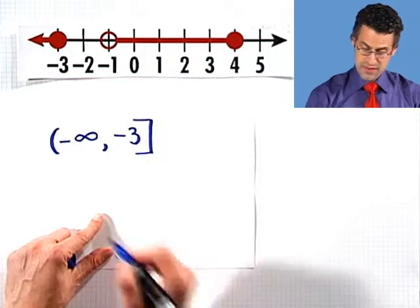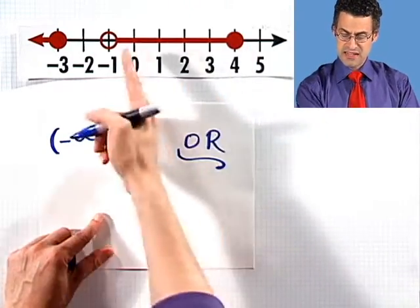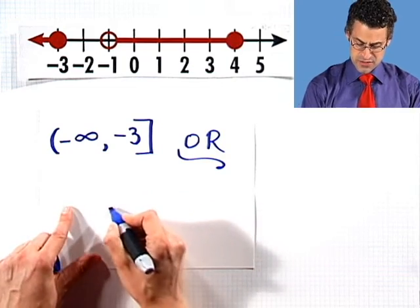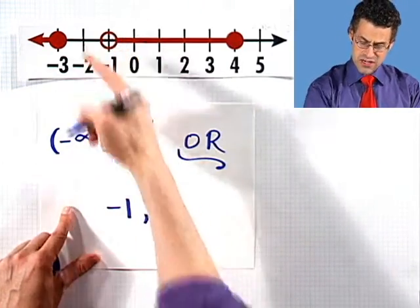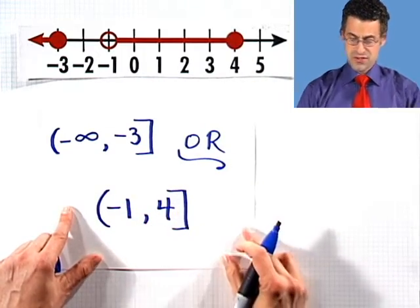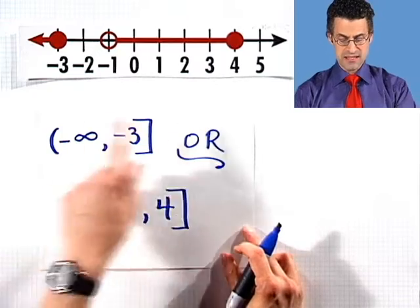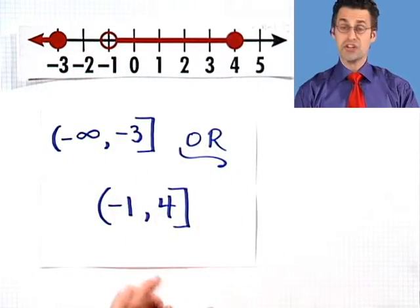And then I say, there's one way of getting in there or, and I actually write the word or, you can gain candidacy by being in this interval, which is between negative one and four. But I don't include negative one. I do include the four. So this is actually the way of expressing this collection of sets using this interval notation.